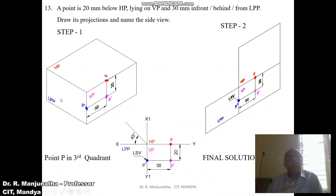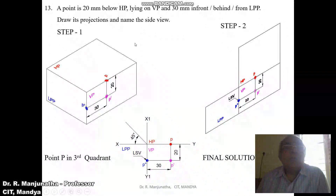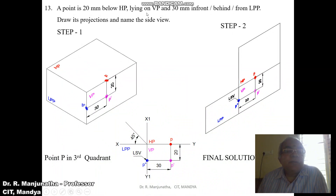Here you have the left profile plane, VP, and HP. When you look from the front view, since the point is lying on VP, you can consider it behind VP for the third quadrant. Behind VP means you have to look from the left side view. When you look from the front view, you can see the distance below HP in the vertical plane — that is p-dash. Since it is lying on VP, the image will rest on HP, so when you look from the top view it will lie on the horizontal plane.